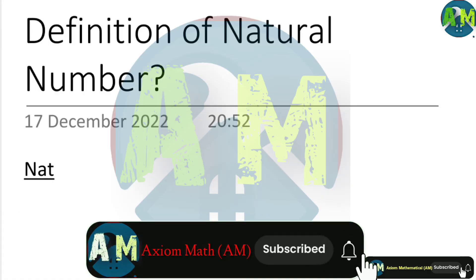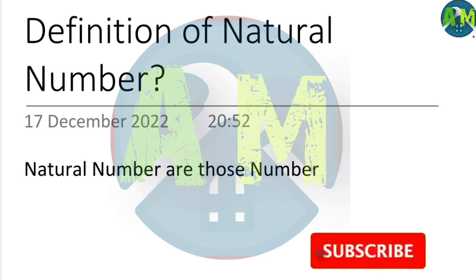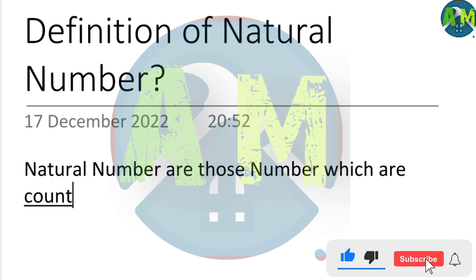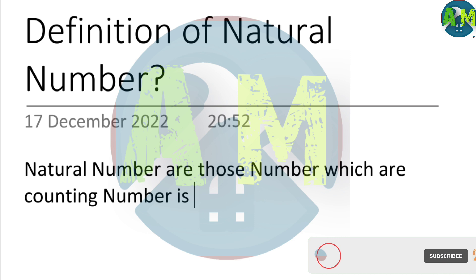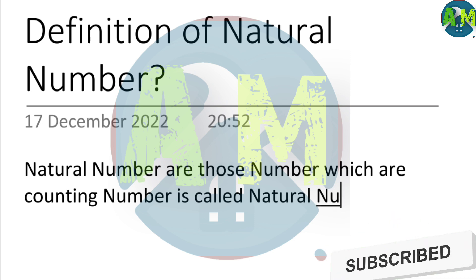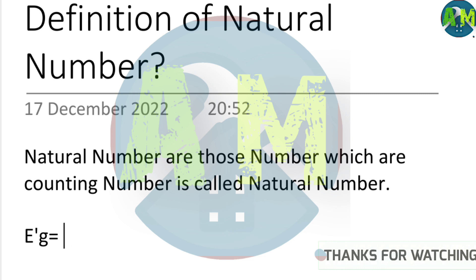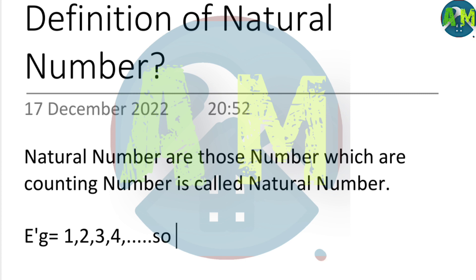What is a natural number? Natural numbers are those numbers which are counting numbers. For example: one, two, three, four, and so on. These are called natural numbers.